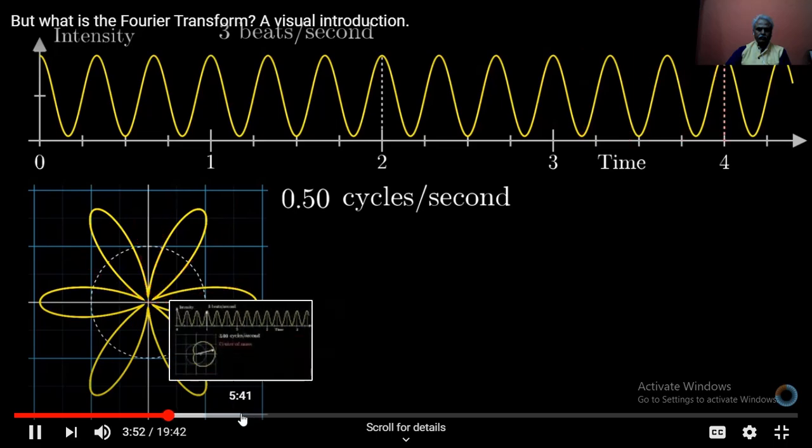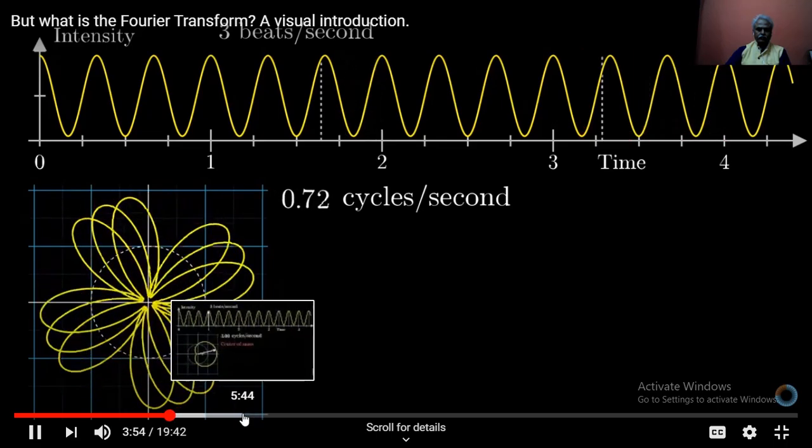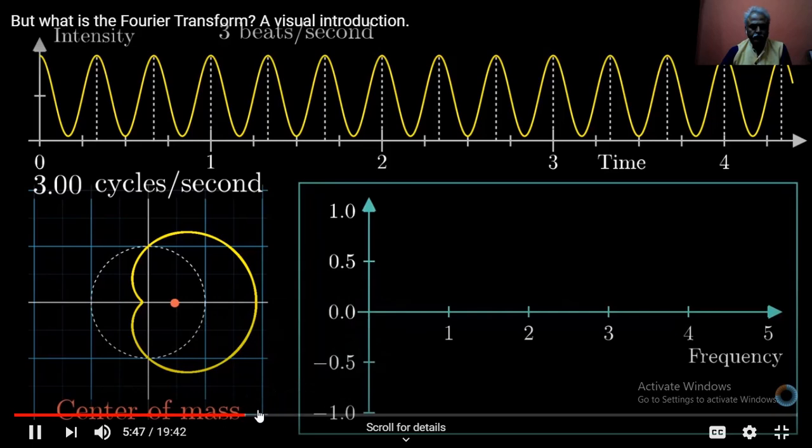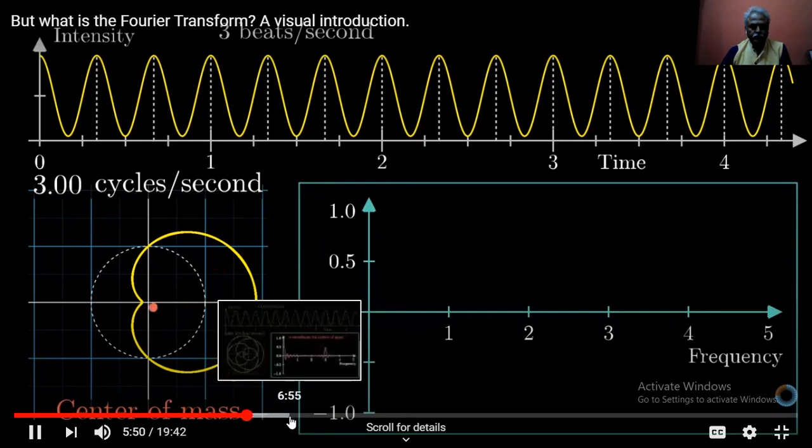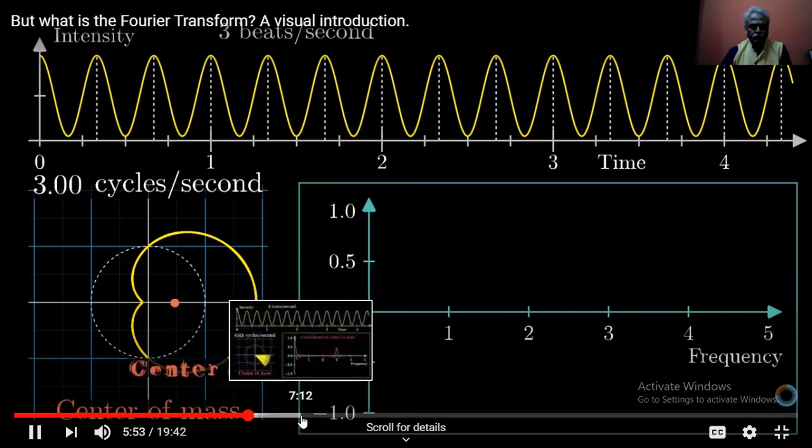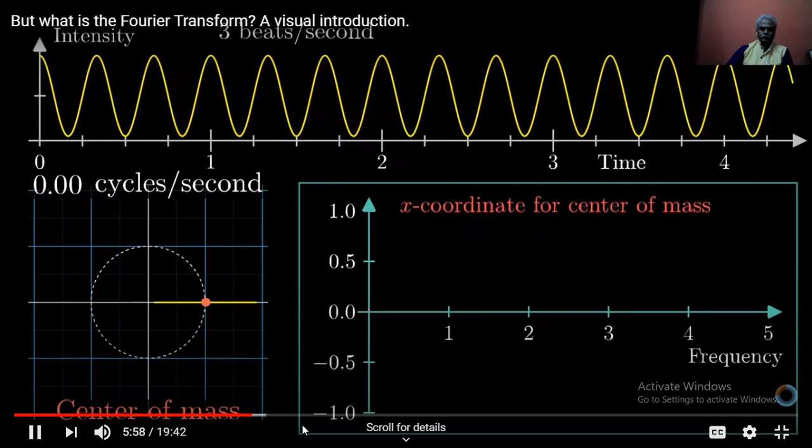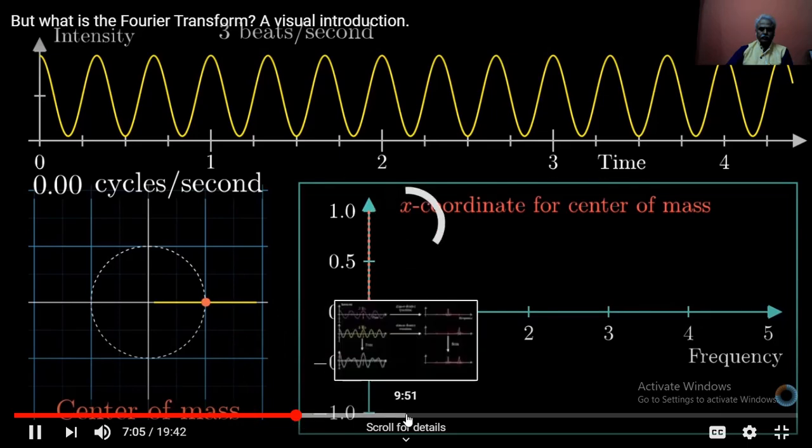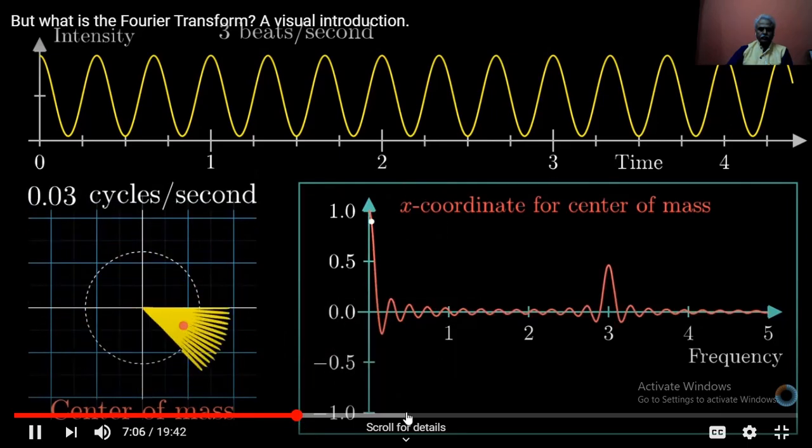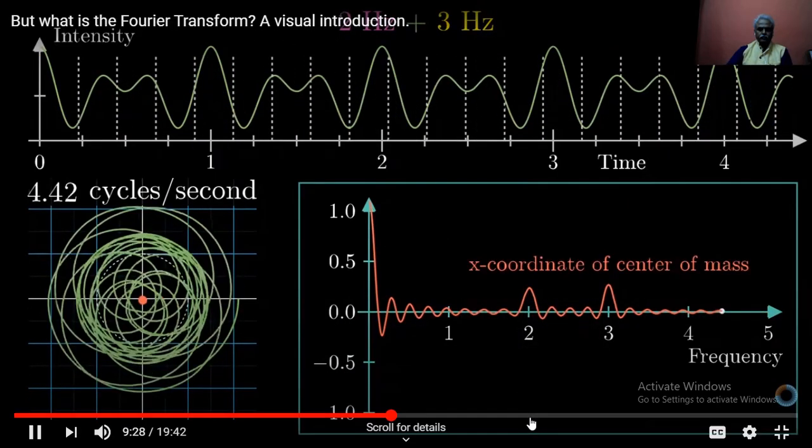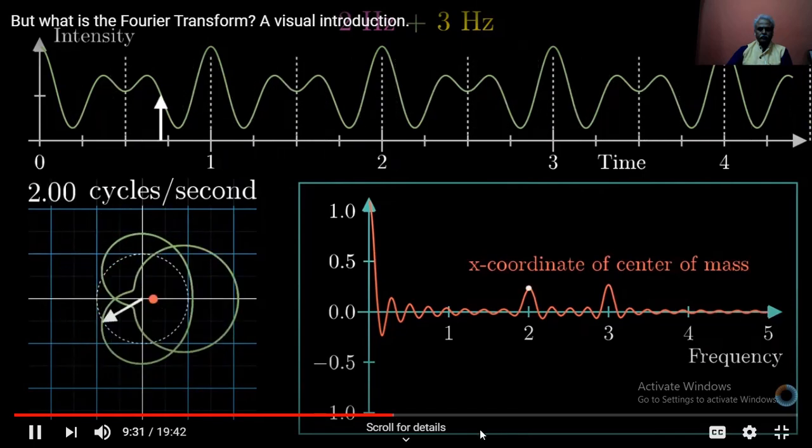The general strategy is to build for ourselves a mathematical machine that treats signals with a given frequency differently from how it treats other signals. To start, consider simply taking a pure signal, say with a lowly 3 beats per second so we can plot it easily. And let's wrap it around a circle at half a rotation per second. But we can adjust that second frequency however we want. Maybe we want to wrap it around faster. We have a plot that keeps track of where that center of mass is for each winding frequency.